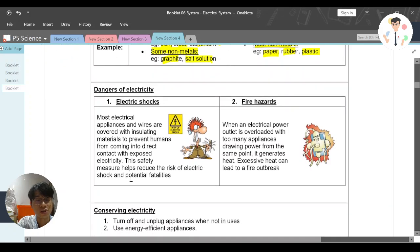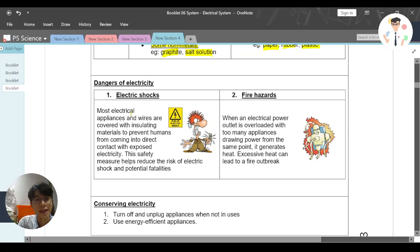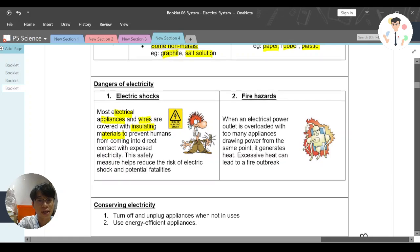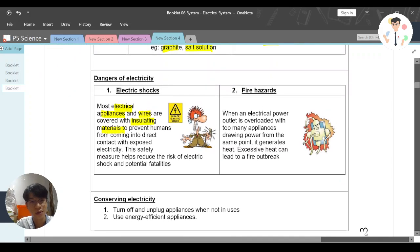So as you know, most electrical appliance and wires are actually covered with these insulating materials. Again, insulating materials basically means the insulators. And the usage is to don't allow electricity to pass through them easily. And this also actually protect us by preventing us from in contact or to have a direct contact with this electricity. And this will help reduce the risk of electric shock and potential fatalities.